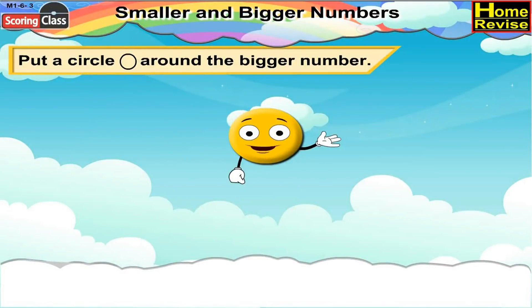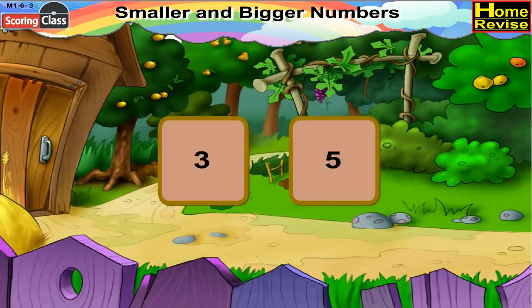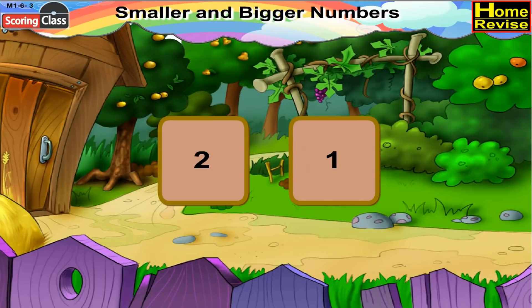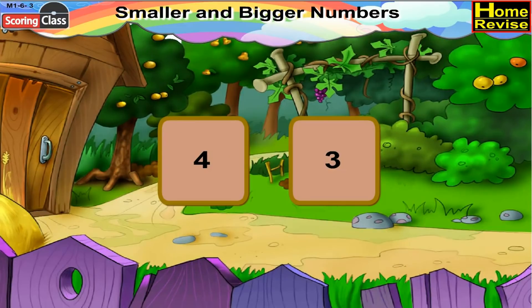Put a circle around the bigger number. Is 3 bigger or 5? It is 5. So put a circle around 5. Now we have 2 and 1. You are right, 2 is bigger than 1. So we will put a circle around 2. Next, 4 and 3 — 4 is bigger than 3. So we will put a circle around 4.